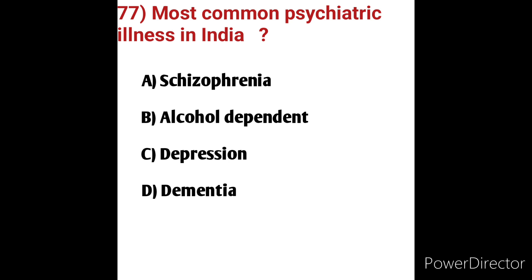The most common mental health disorders in India by rate: first is depression, second is anxiety/phobia, and third is eating disorders. So the most common psychiatric illness in India is depression — option C is correct. Schizophrenia, alcohol dependence, and dementia were discussed in previous videos.